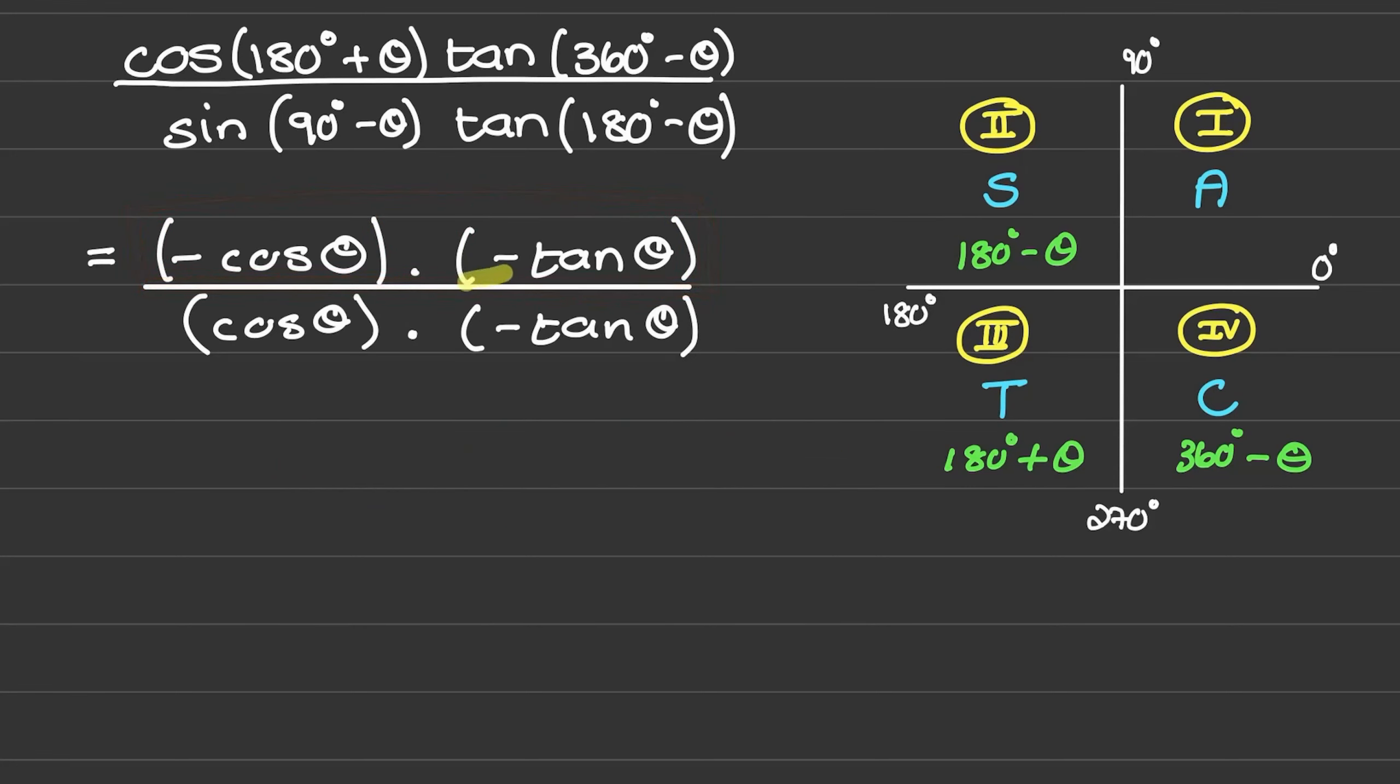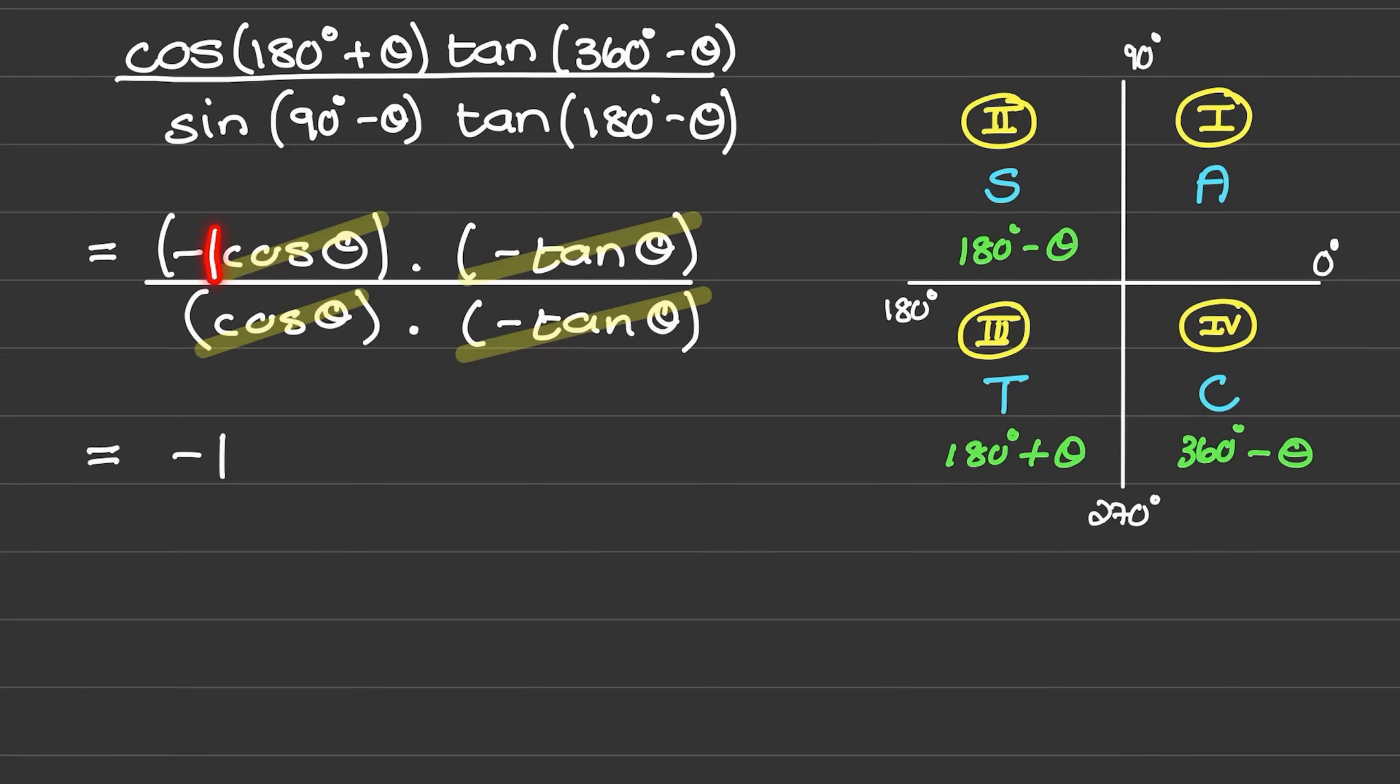We can also see we have negative tan theta divided by negative tan theta, so those terms will cancel out. We also have cos theta divided by cos theta, so that would simplify to an answer of negative one.